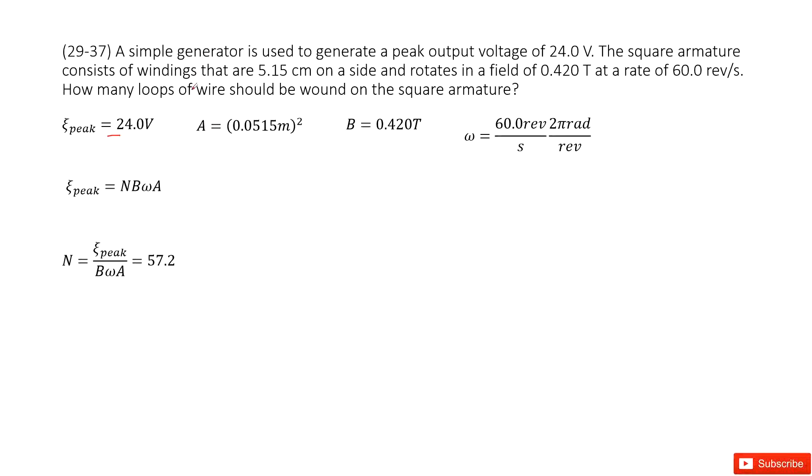And then this is a loop, a square loop. We can see its cross-sectional area can be given as there. This is side squared.